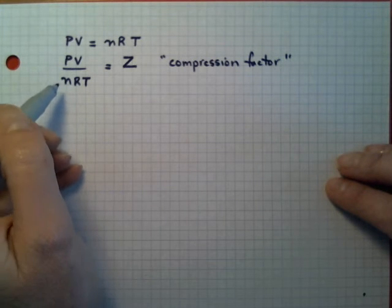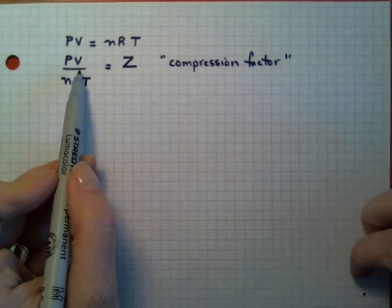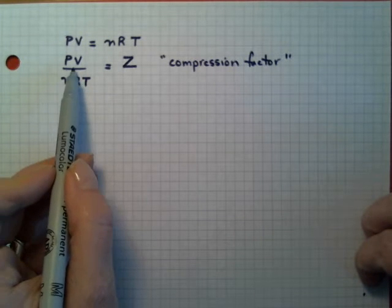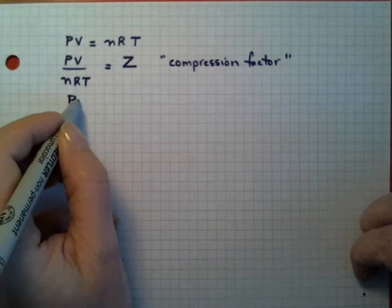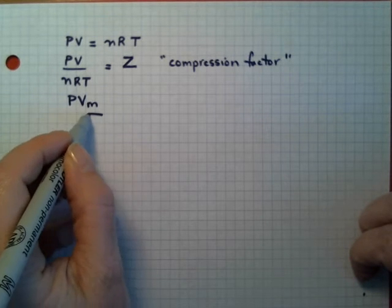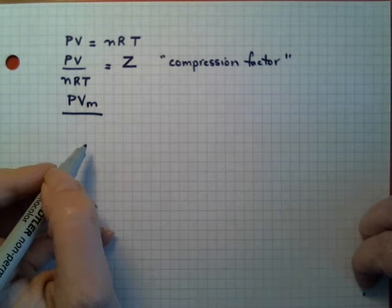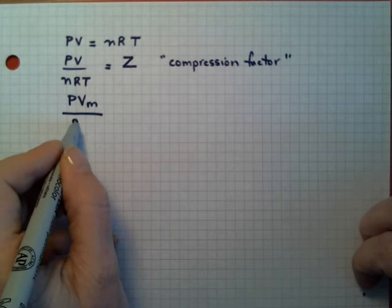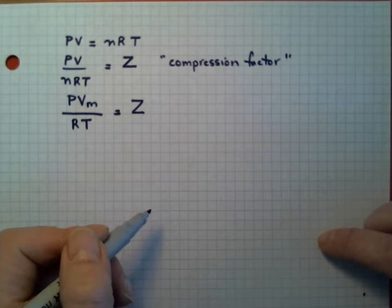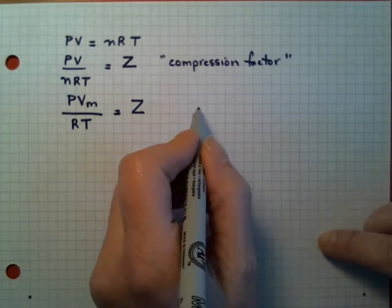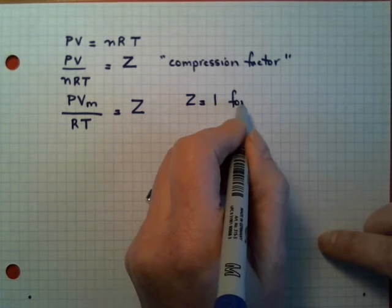Now, we talked about intensive and extensive properties. Volume is an extensive property. If I divide volume by the number of moles, I get something called a molar volume. So a molar volume is PVm, that M is a subscript. PVm over RT is equal to my compression factor. Indeed, Z is equal to one, exactly one, for a perfect gas.